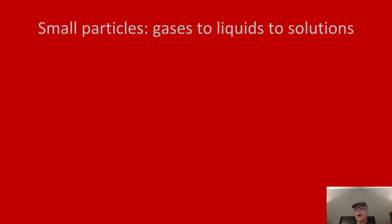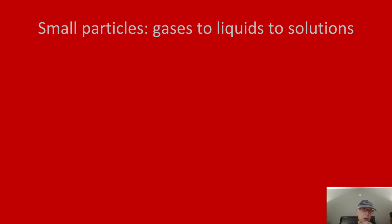Hello, Paul Russo here again. I'm back to talk a little more about light scattering. In the first two videos, we learned about what scattering is and why we use it, what typical instruments look like, and we looked at what electromagnetic radiation really is — the Poynting vector and so forth. We talked about dipole moments and oscillating dipoles, and saw a donut-shaped radiation pattern. That was all for point particles — what we could call gases — and now we're ready to move ahead from gases to liquids to solutions, polymer solutions particularly.